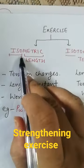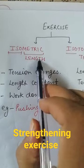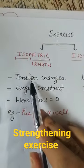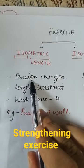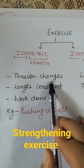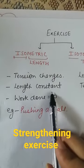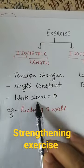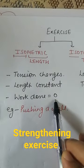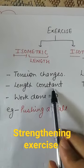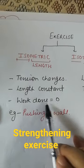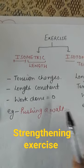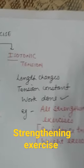Isometric — 'iso' means same, 'metric' means length, so the length is the same. The tension changes but the length remains constant. This is why the work done is zero, because there is no displacement. For example, pushing a wall.